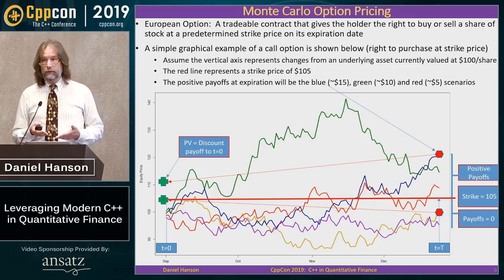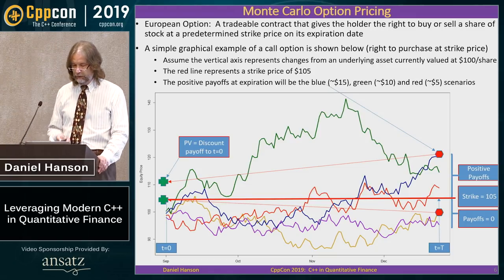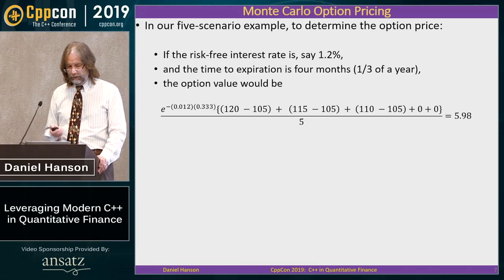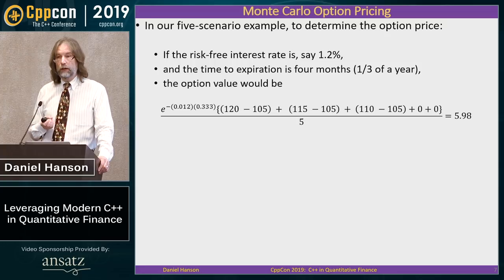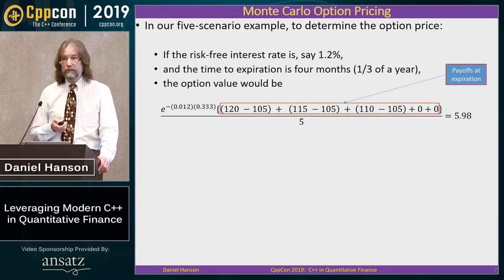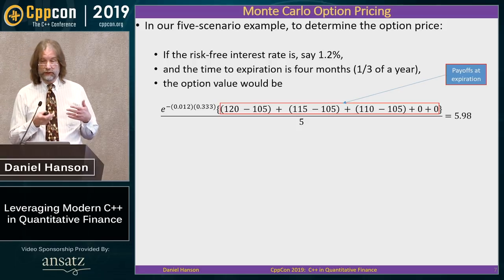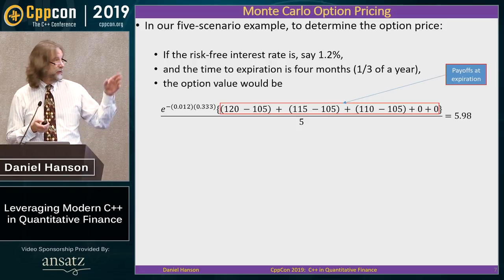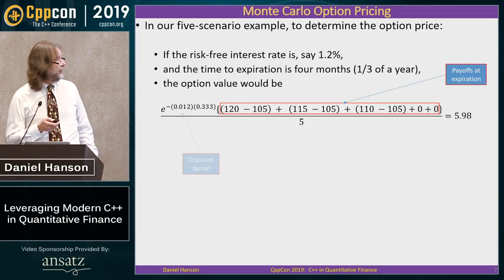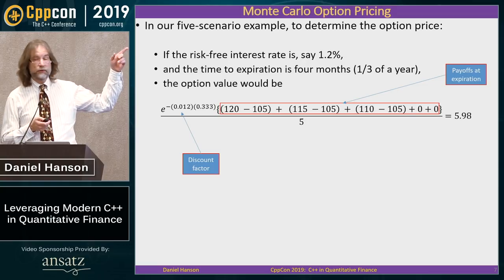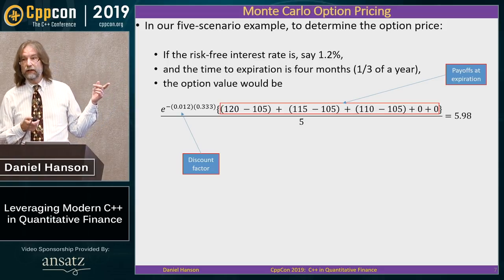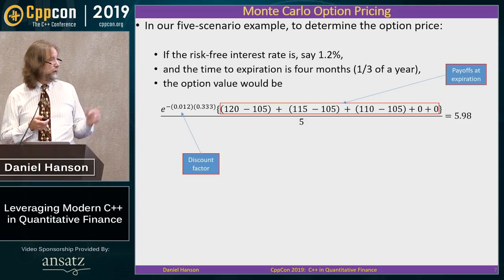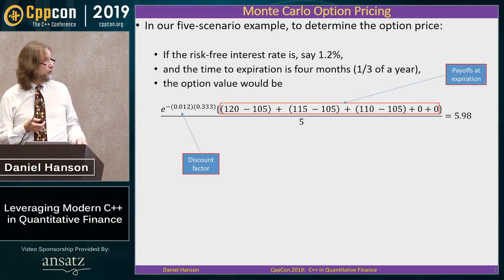This sets up the model. To price the option, suppose the risk-free rate of interest is 1.2% and our time to expiration is four months, or one-third of the year. We add up all of the payoffs, discount back to today using the interest rate and time to maturity, and take the average over the total number of scenarios. That gives us our option price — in this case about $6.